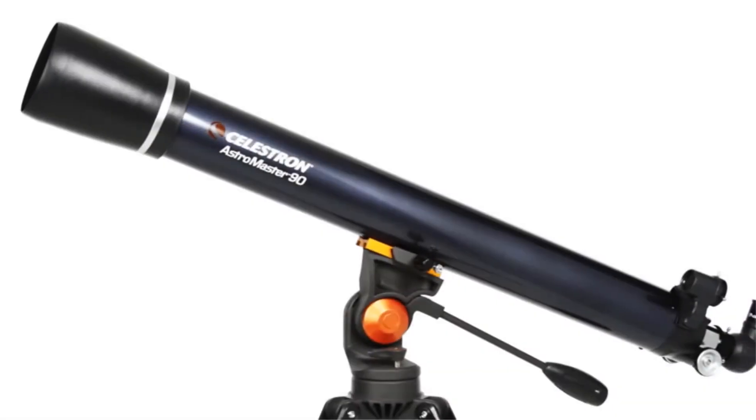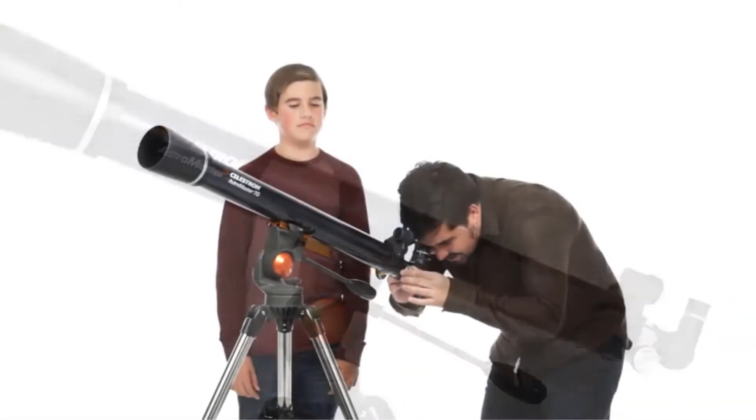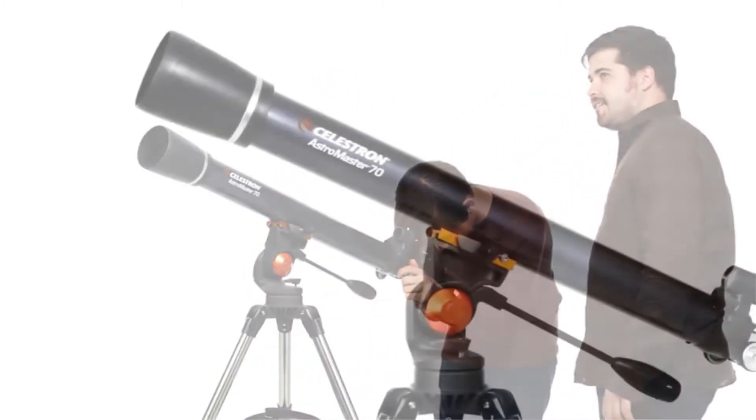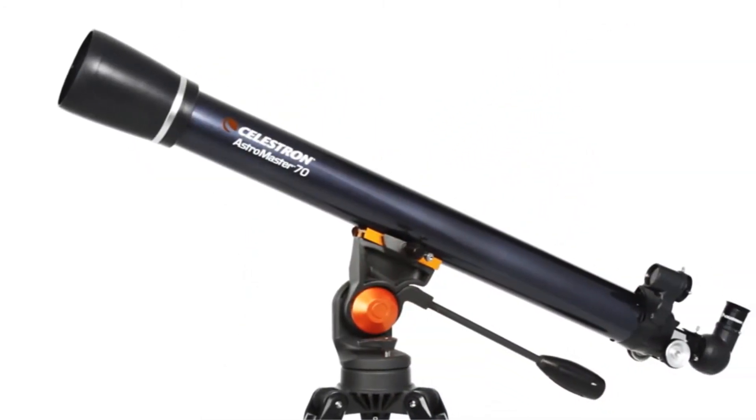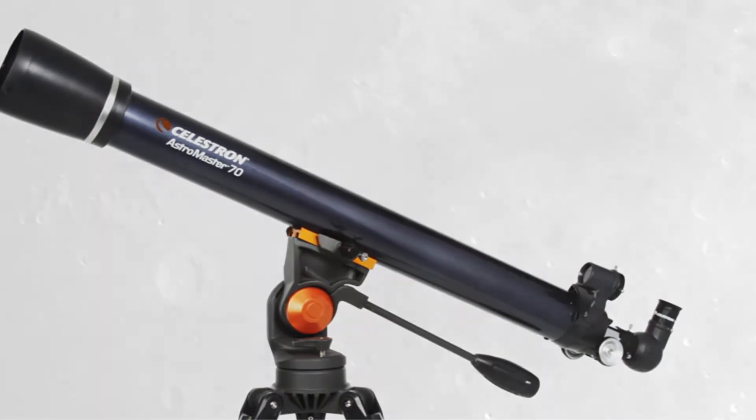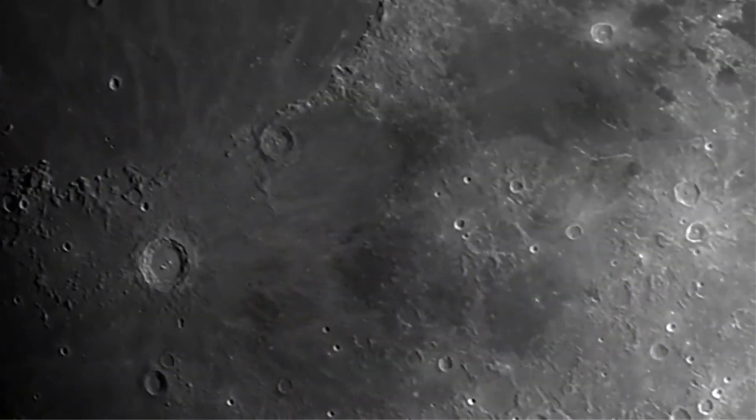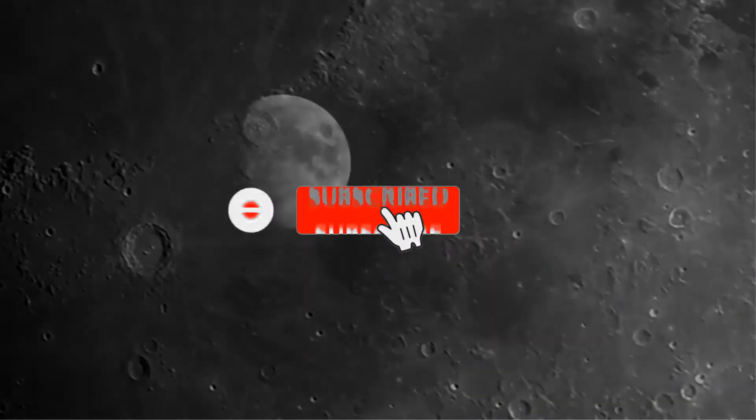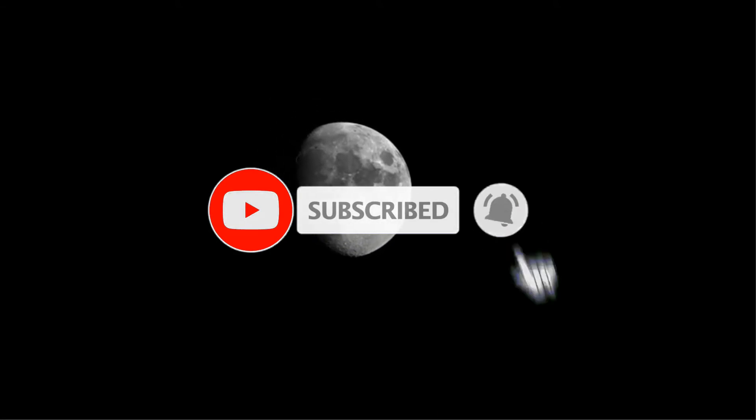The Celestron Astro Master features a lightweight frame and specialty-coated lenses that are specifically designed to render high-quality images even in the dark. The kit comes with two different lenses, a stand, and a software program that will help you to get used to your new telescope.